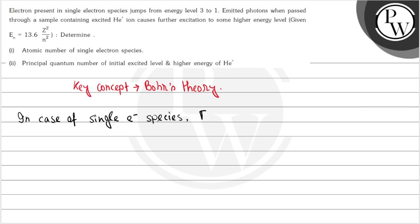We have En equals minus 13.6 times z squared times (1 by n1 squared minus 1 by n2 squared).